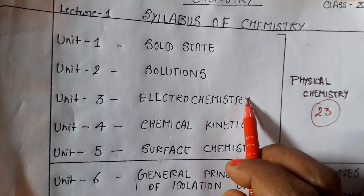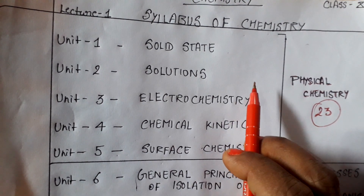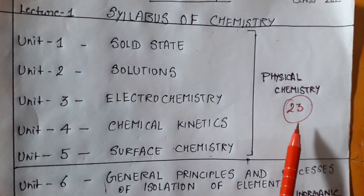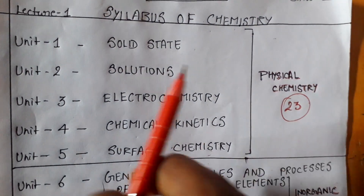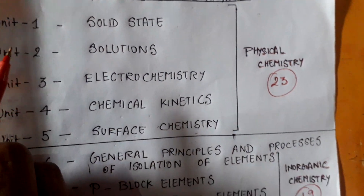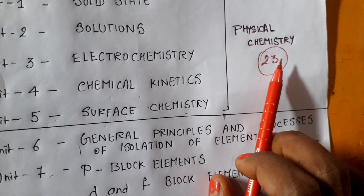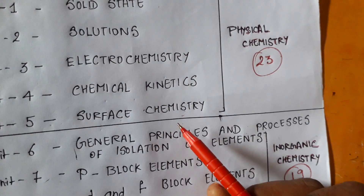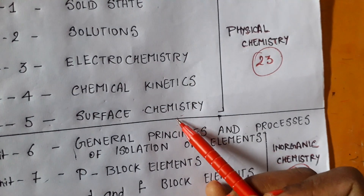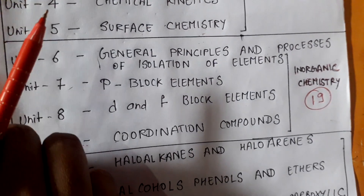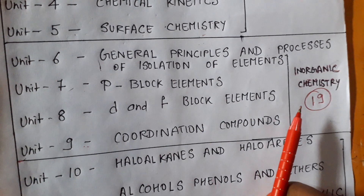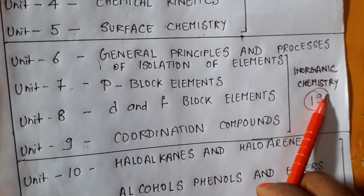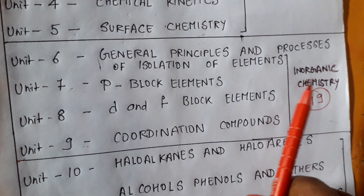In the final examination, questions of 23 marks are asked from these 5 chapters of physical chemistry.